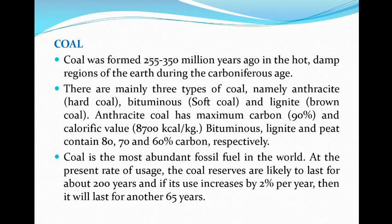The first example is coal. Coal was formed 255 to 350 million years ago in the hot, damp regions of the earth during the Carboniferous age. There are mainly three types of coal: anthracite (also called hard coal), bituminous (soft coal), and lignite (brown coal). Anthracite coal has maximum carbon content — that is 90% — and a calorific value of 8700 kilocalories per kg.